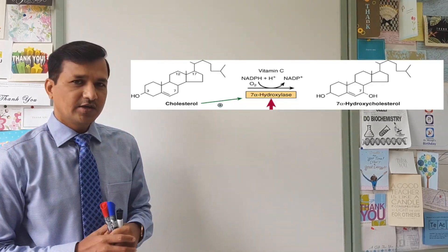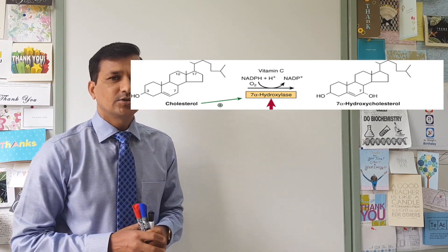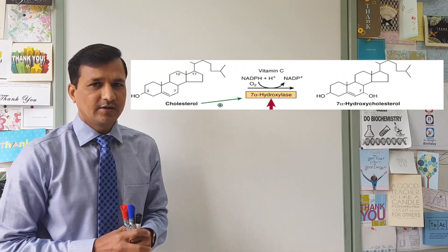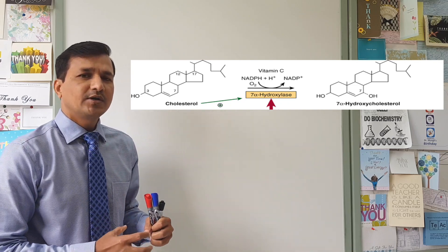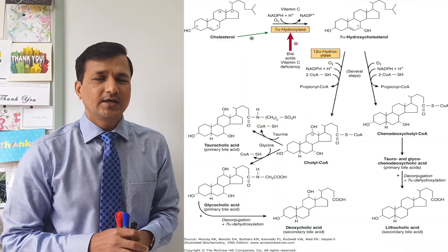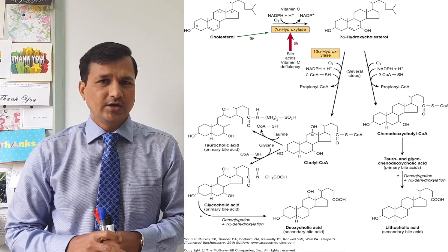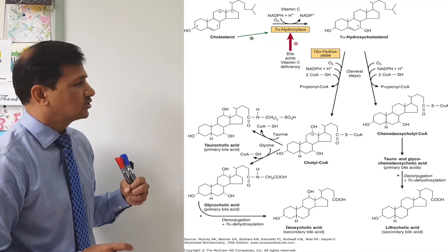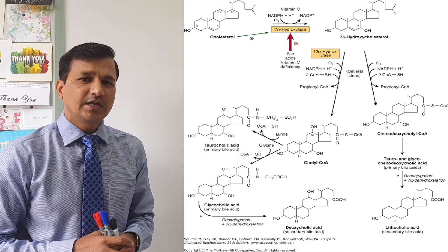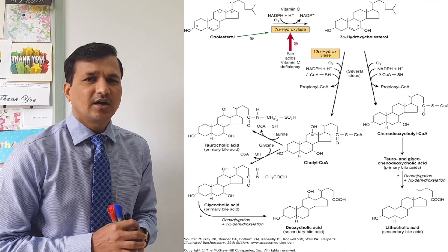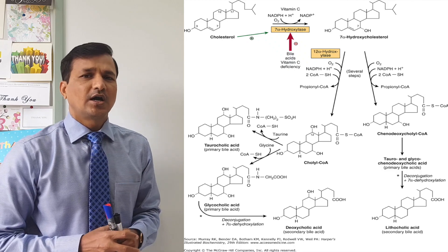What does this enzyme do? 7-alpha hydroxylase converts cholesterol into 7-alpha hydroxycholesterol, as shown in the figure. Then, 7-alpha hydroxycholesterol is converted by 12-alpha hydroxylase. This enzyme removes a 3-carbon propionyl CoA from the hydrocarbon chain attached to the cholesterol molecule at the 17th carbon atom.